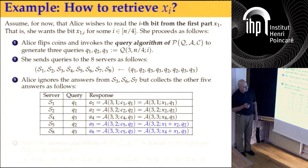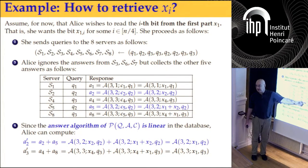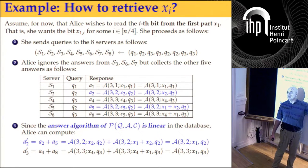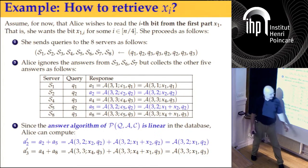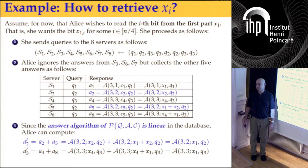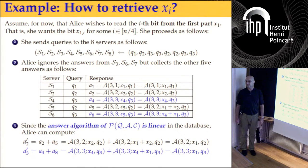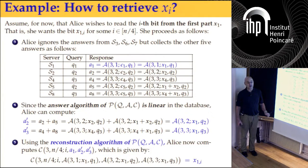Now I crucially use the linearity. I'll take A2 and A5 — both contain X2, so adding them cancels out the X2 contribution by linearity. Similarly, I take two others and add them up; X2 cancels there too. I'm left with A1 and two modified answers, and I plug these three into the original reconstruction algorithm of P.